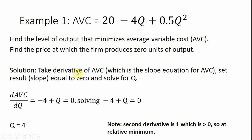The solution is to take the derivative of average variable cost, which is technically the slope equation or slope function for average variable cost, set that slope equal to zero, and then solve for q. So taking the derivative of average variable cost — the thing we're trying to minimize — we're going to get minus 4 plus q. Bring the 2 down in front; 2 times 0.5 is 1, and then in the exponent, 2 minus 1 leaves us just with q. So solving for q, q equals 4.